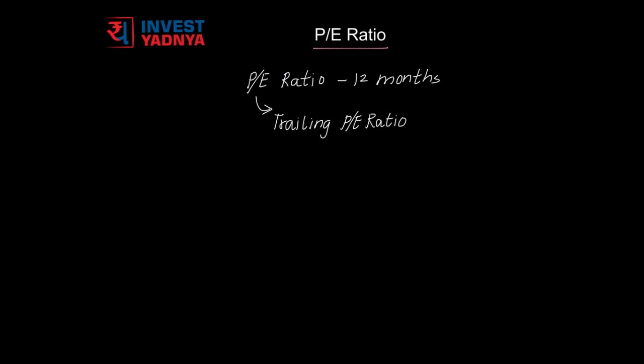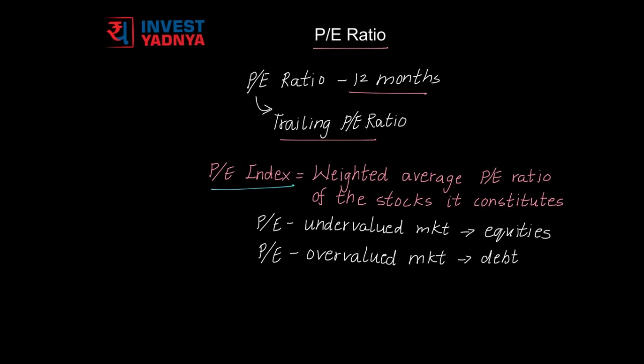P.E. Ratio where the earnings of the past 12 months is considered is called a trailing P.E. Ratio, but the past performance of a company may or may not be repeated. P.E. Ratio of an index is the weighted average P.E. Ratio of the stocks it constitutes.